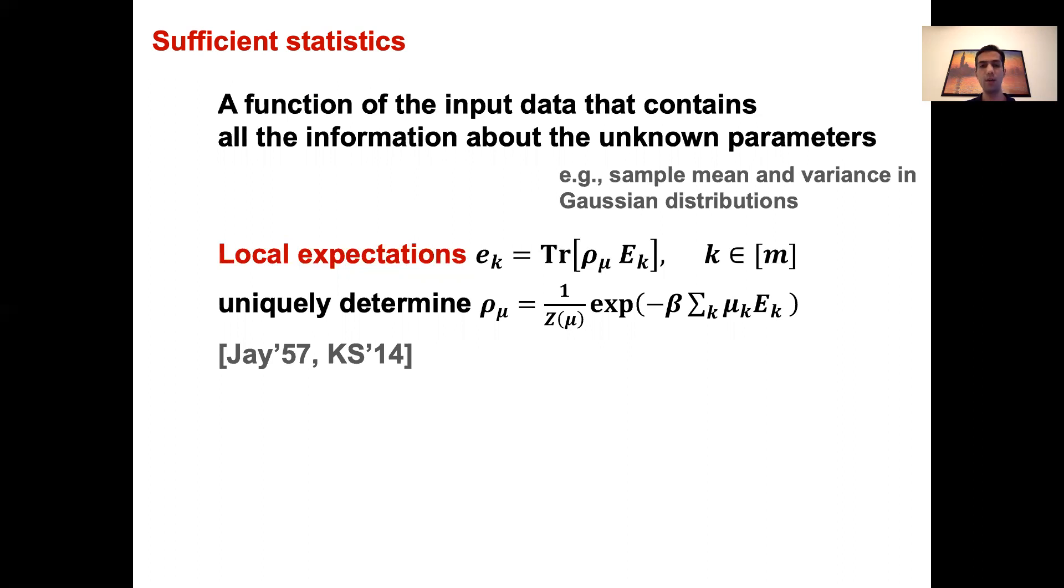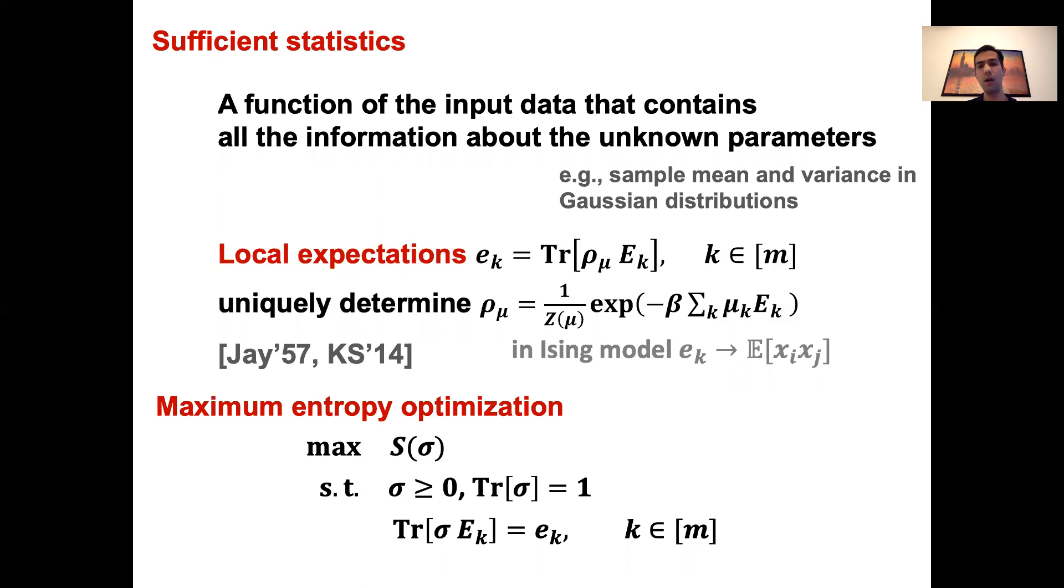Precisely, by measuring the operators E_k and taking their averages, we obtain the local expectations e_k, which uniquely determine the Gibbs state. So again, remember that the operators E_k are usually just a tensor product of a few Pauli operators. For instance, for classical Ising model, these local expectations correspond to the expectations of the value of edges and vertices. Assuming we have these local expectations e_k, there is a natural algorithm for obtaining the Gibbs state, and this is called the maximum entropy optimization. The idea here is that among all the quantum states whose local expectations match the given values e_k, we choose the one that has the maximum von Neumann entropy. It can be shown that the output state of this optimization, which actually is a convex program, equals the original Gibbs state. And as we will see shortly, the interaction coefficients μ can be also obtained in a similar way.